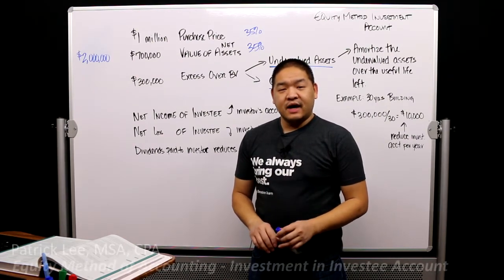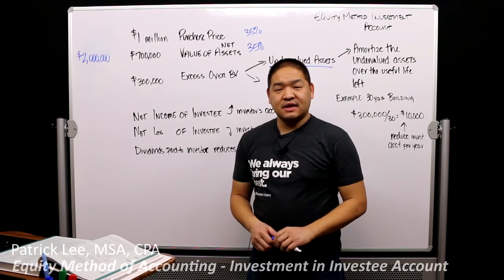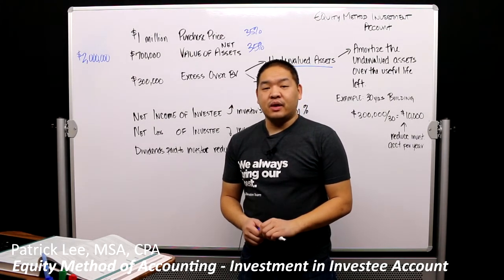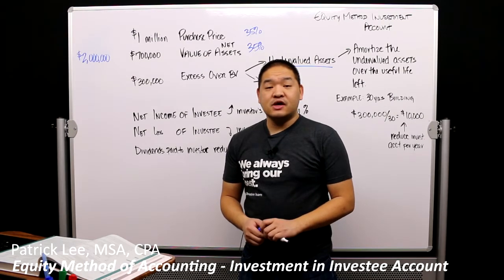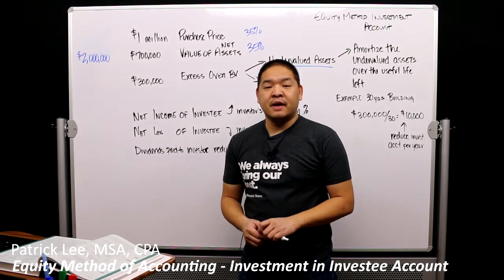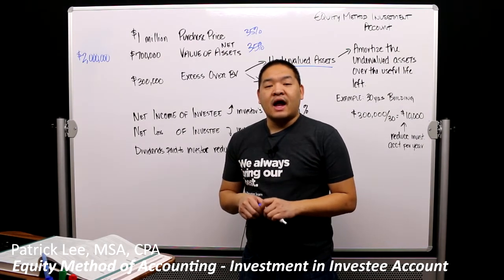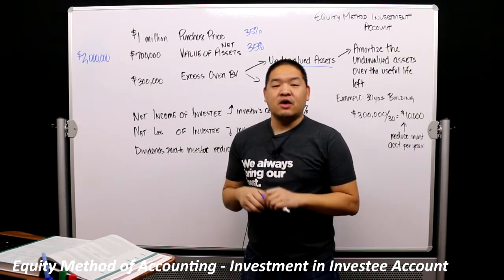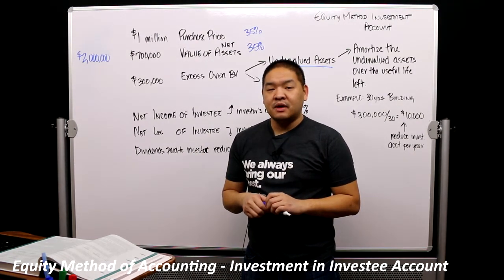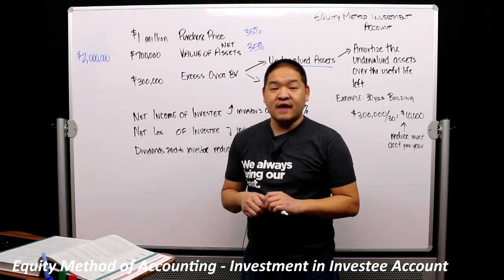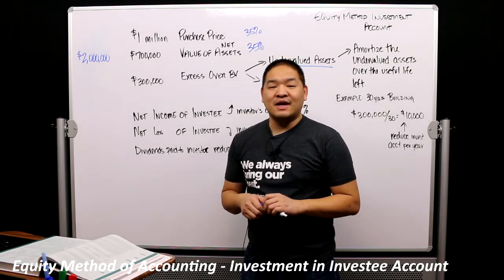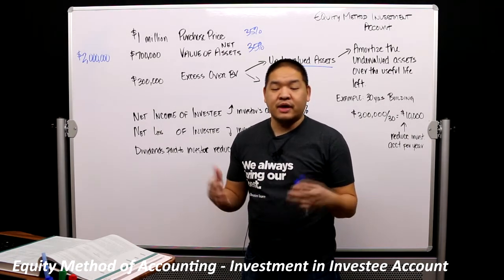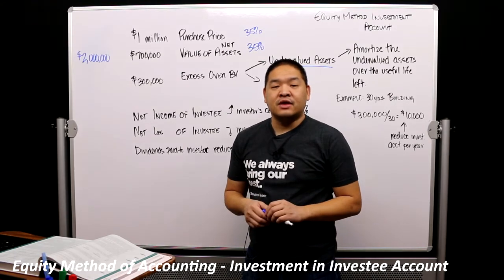In this lesson, we're going to go over the equity method of accounting. In particular, we're going to go over the investment in investee account. This is an account that we would put in our books to keep track of our investment in another company. An example would be that I'm a corporation and I decide to invest 35% in company A, so I would have a new account called investment in company A. When I do my journal entries for that investment, I would debit investment in company A for X amount of dollars, and I would credit cash or equipment or whatever I give them for that 35% ownership.